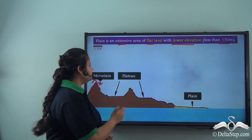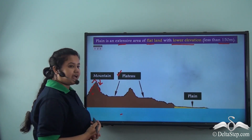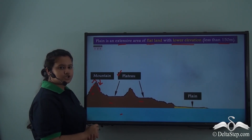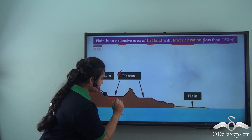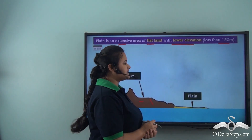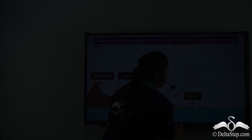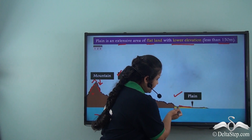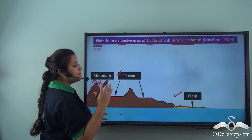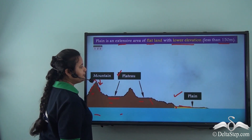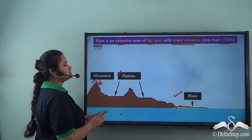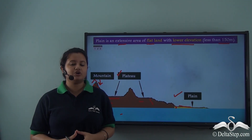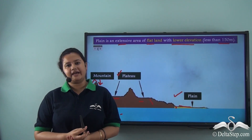The second type of landform is a plateau. A plateau is a type of landform with a flat top and steep slopes. The last type of landform is a plain — a flat land with lower elevation. The elevation of plains is much lower compared to the other two landforms, the mountain and the plateau. Thus, plains are quite different from a mountain and a plateau.